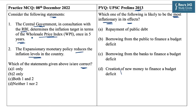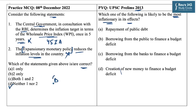Statement 1 is incorrect because under Section 45ZA of the RBI Act, the central government in consultation with RBI determines the inflation target in terms of the Consumer Price Index, not the Wholesale Price Index. Statement 2 is also incorrect because the expansionary monetary policy increases the credit supply in the economy, and when credit supply increases, there are high chances that inflation will increase. So both statements are incorrect and the answer is D — neither 1 nor 2.